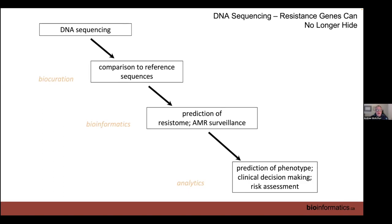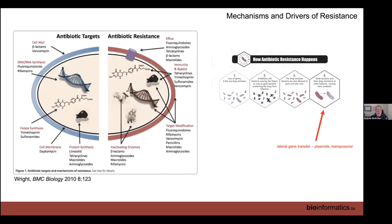There are really three fields involved: biocuration — how you take knowledge and digitize it; bioinformatics — the algorithm space for genome annotation; and analytics — how you make reliable phenotypic predictions from genotype. We're going to talk about all three today, and in the lab we'll use my lab's product, the Comprehensive Antibiotic Resistance Database, our RGI software, and we'll show some of our machine learning results.